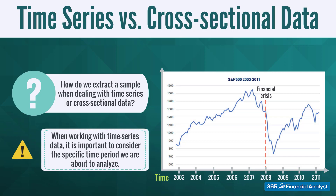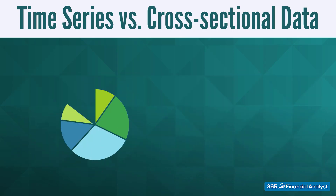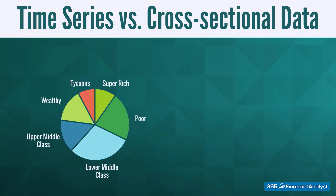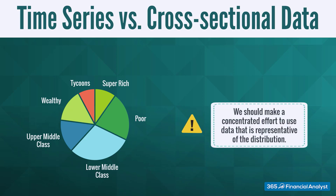Homogenous macroeconomic conditions would greatly improve the precision of our analysis. Whenever extracting a sample of cross-sectional data, we have to be cautious too. Considering that the extracted observations come from a specific distribution, we should make a concerted effort to use data that is representative of that distribution.